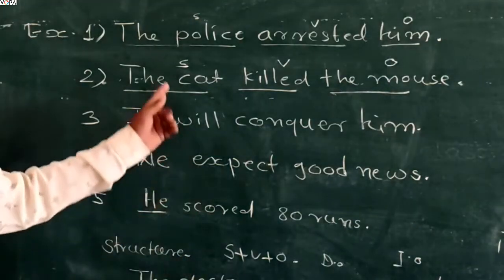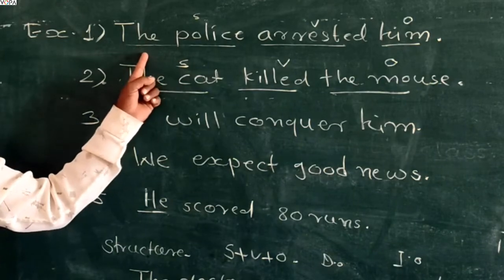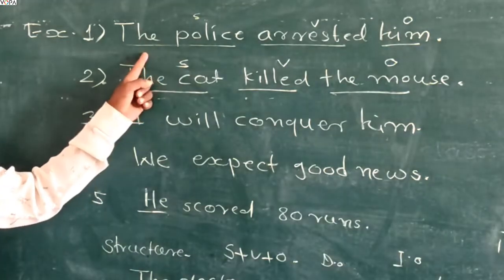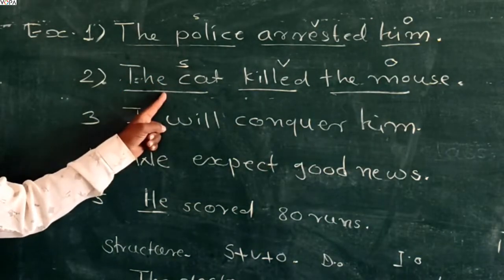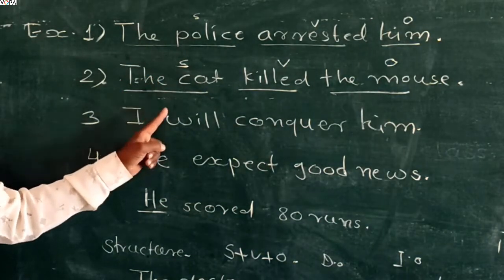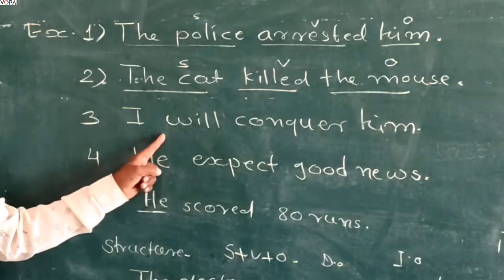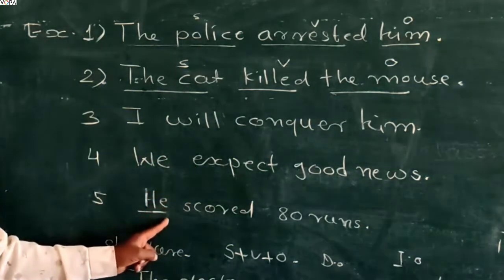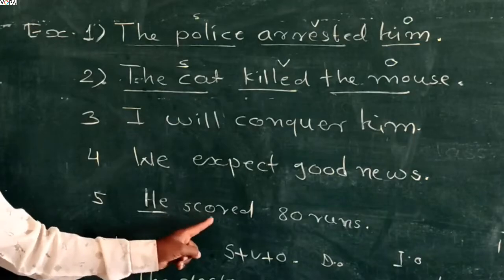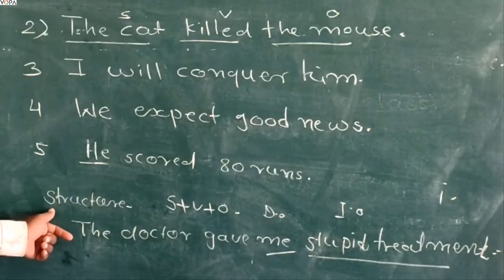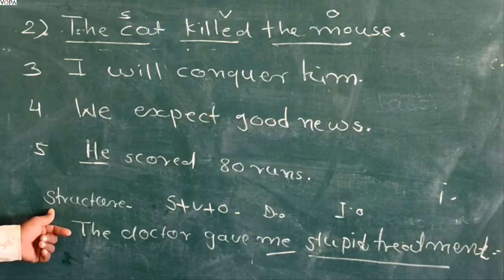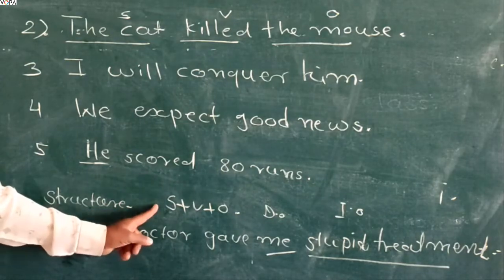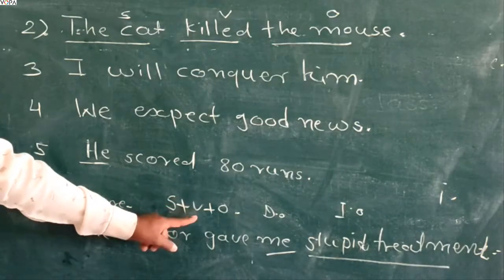Here are some examples of active voice: 'The police arrested him.' 'The cat killed the mouse.' 'I will conquer him.' 'We expect good news.' 'He scored 80 runs.' Now, students, see here the structure — the format of the active voice is: Subject + Verb + Object.